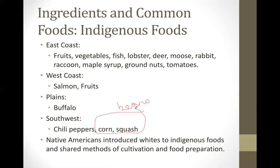There's a legend of an Indian named Squanto. It's said that he showed white settlers how to plant and raise corn. What he would do was take a corn kernel and put it in the head of a dead fish — that dead fish would be buried in the ground, with the fish head serving as fertilizer for the corn.